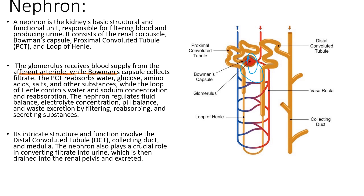And then comes the loop of Henle. The loop of Henle is divided into two parts: the descending loop of Henle and the ascending loop of Henle. The descending loop of Henle is permeable to water, allowing for the reabsorption of water back into the blood, preventing dehydration. The ascending loop of Henle is responsible for the reabsorption of sodium and chloride ions. The loop of Henle is a U-shaped segment that extends from the proximal convoluted tubule, playing a vital role in the concentration and reabsorption of water and sodium.